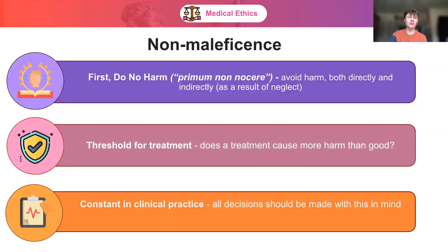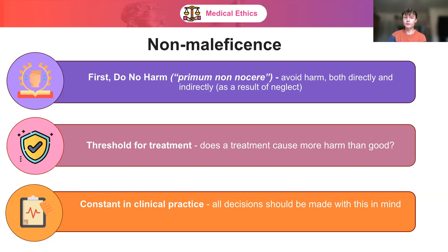The next pillar is non-maleficence. When you become a doctor, you take the Hippocratic Oath — primum non nocere, meaning 'first do no harm.' You promise to avoid all harm to patients, both directly or indirectly as a result of neglect. Non-maleficence also sets a useful threshold for treatment: if a treatment causes more harm than good, is it ethical? It's a constant in clinical practice, meaning all decisions should be made with the aim to avoid patient harm.